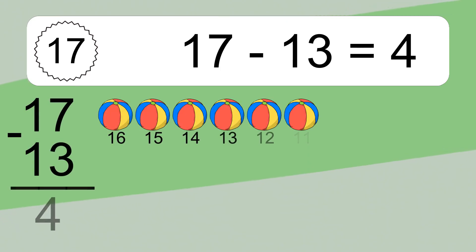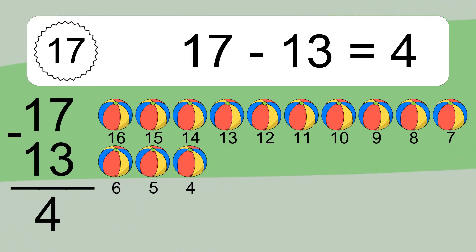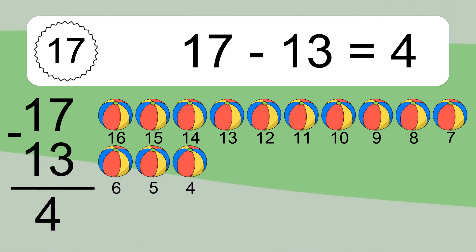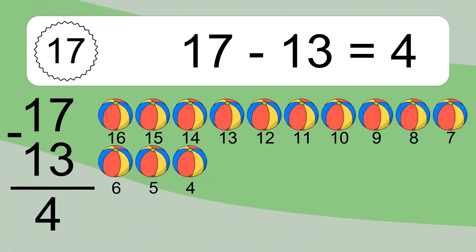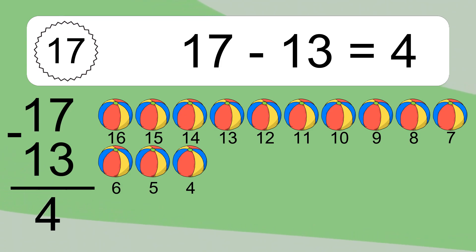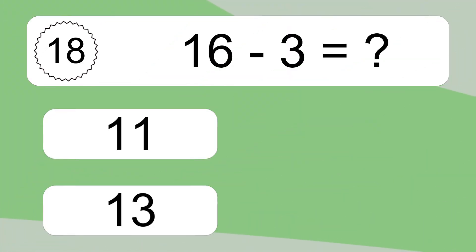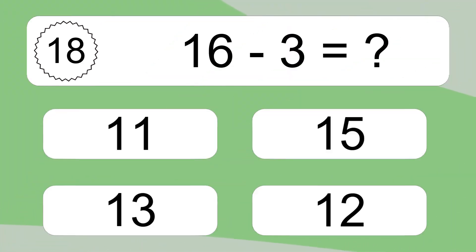17 minus 13 equals what? 17 minus 13 equals 4. Let's count it: 16, 15, 14, 13, 12, 11, 10, 9, 8, 7, 6, 5, 4.